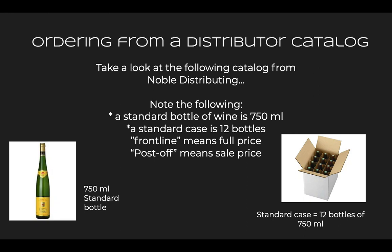First, a standard size bottle of wine is 750 milliliters. Something you always want to be aware of when looking in distributor catalogs is the size of the package. It's easy to find the item you want, see that the name matches, and not follow the column over to check the size — then your delivery arrives and the size is off. A standard bottle is 750 milliliters, but you'll occasionally come across a half-size bottle at 375 milliliters or a magnum at 1.5 liters.